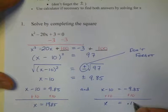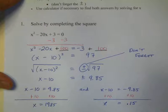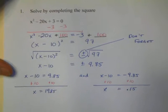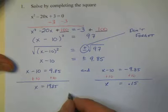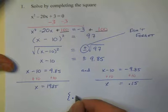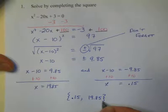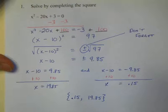That gives us on the right, x equals 19.85 as an answer, and on the left, x equals 0.15. It's important as we're doing this that we write our answer using solution set notation. And so, using solution set notation, our answer is going to be 0.15 comma 19.85.